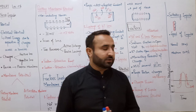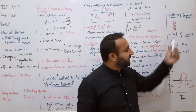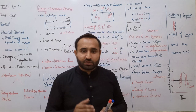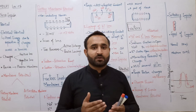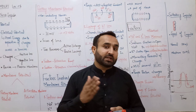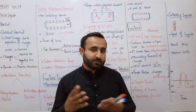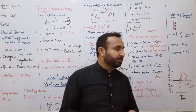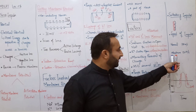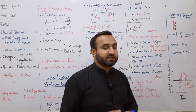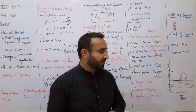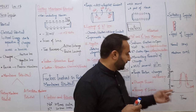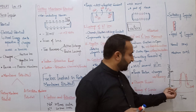Speed of nerve impulse: nerve impulse کی normal speed 100 meter per second ہے۔ لیکن جو maximum speed note کی گئی ہے وہ 120 meter per second ہے۔